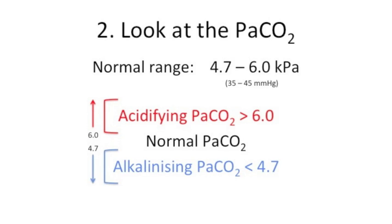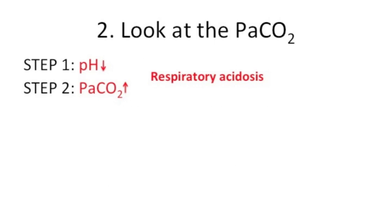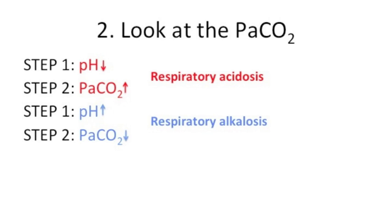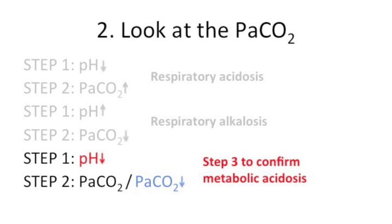A high CO2 makes the blood acidic and a low CO2 makes the blood more alkaline. Now you need to combine Step 2 with Step 1. If they both agree, then the problem is respiratory — so a respiratory acidosis or respiratory alkalosis. If the CO2 doesn't agree with the pH, then you have probably got a metabolic problem — a metabolic acidosis or metabolic alkalosis — but you still need to finish the process to confirm this.